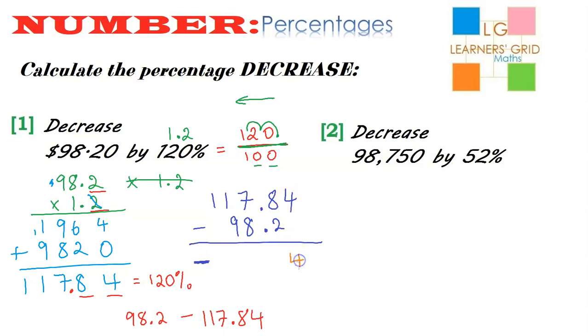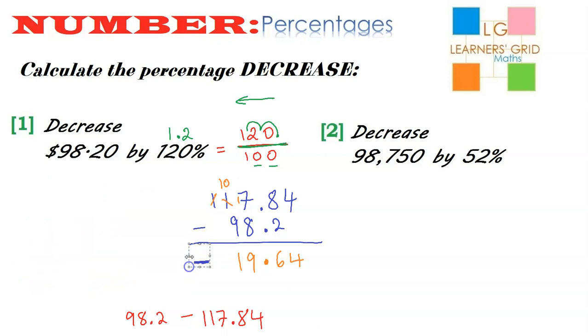So 4 minus 0, that's 4. 8 minus 2 is 6. Decimal point, put it in. 7 minus 8 we cannot do, so we have to borrow. This becomes 17, so this is 9. 0 minus 9 we certainly can't do, so I have to borrow. 10 minus 9 is 1. And so the final answer is, now I'll just clear up the board a little bit. And remember, I said the answer had to be negative. So the final answer is negative. Units of measurement, $19.64.